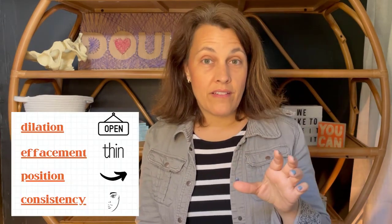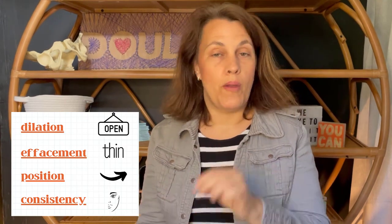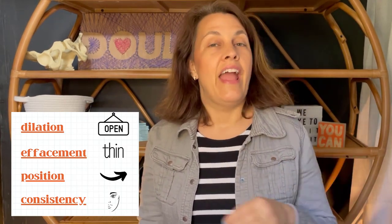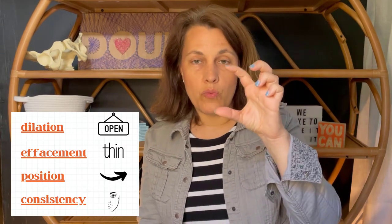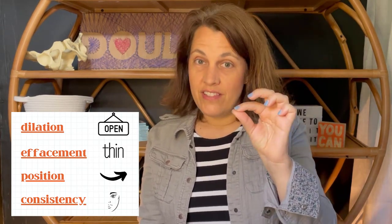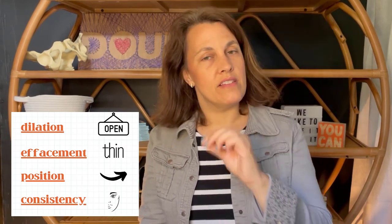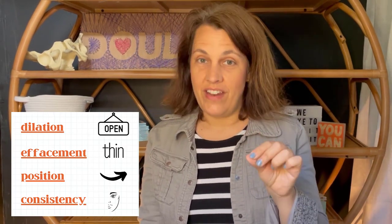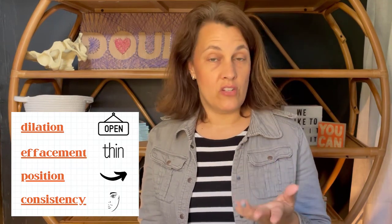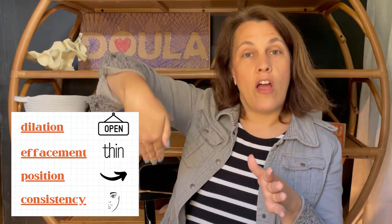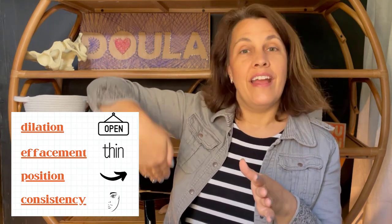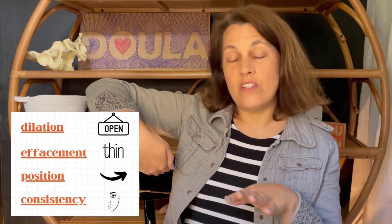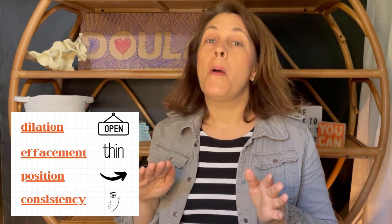The four different ways the cervix will change - a couple you might already know, a couple you might not. You've probably heard of dilation: the opening of the cervix from zero centimeters to ten centimeters. Then we have effacement, where the cervix starts out thick and thins, measured in percentages from zero percent when it's thick to 100% when it's fully thinned. The other two you might not have heard of: one is position - the cervix starts off pointed towards the back when we're pregnant, which is posterior, then moves to anterior as it changes.